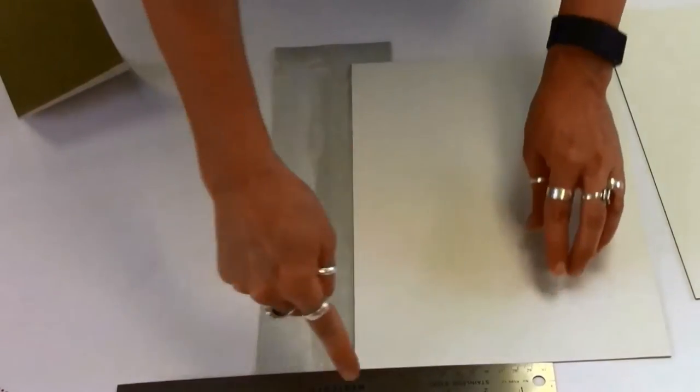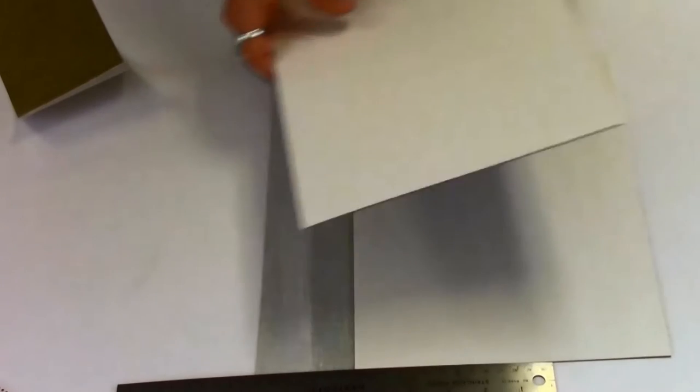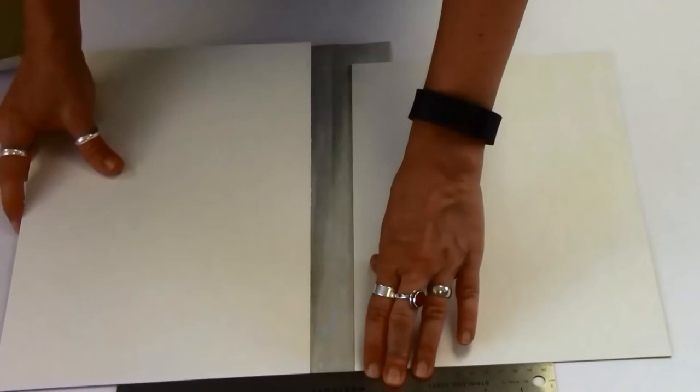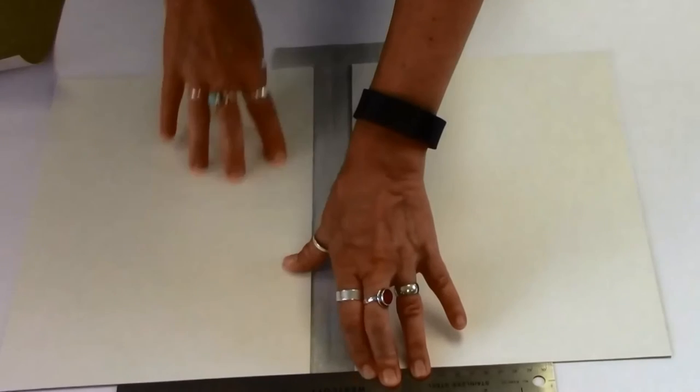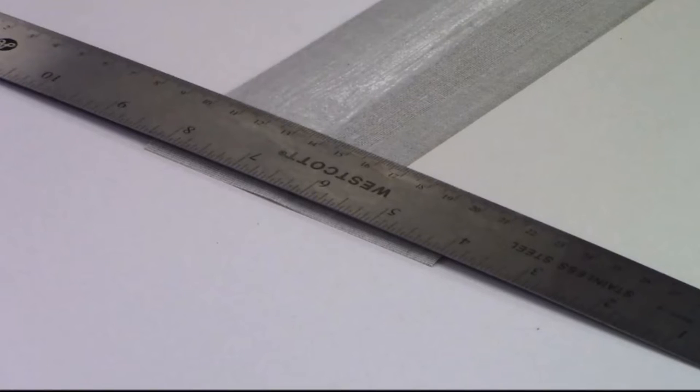Using an archival adhesive, glue the two pieces of board on the back of the cloth as shown on the image. Use the ruler as a guide to ensure the boards are placed squarely.